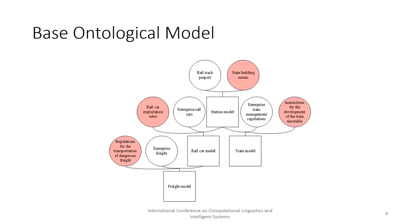To combine the unified automated control system for freight traffic models and their individual ontologies, each base ontology's model is developed. Each base ontology model node is a sub-ontology. The square node is the unified automated control system of freight traffic of the model, the filled round node corresponds to the regulation, and the round node without a field corresponds to the client's enterprise database.